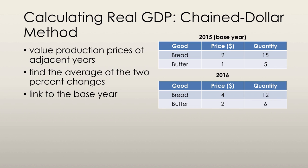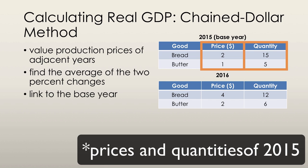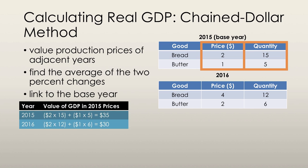Now we're going to take a look at how to calculate real GDP using the chained dollar method. The first step is to take the prices of adjacent years and value the quantities at those adjacent year prices. So we're going to start by taking the prices of 2015 and multiply them by the quantities of 2015 to get total GDP in 2015. We have 2 times 15 for bread, plus 1 times 5 for butter, and as we can see in the graph on the lower left-hand corner, that gives us $35.